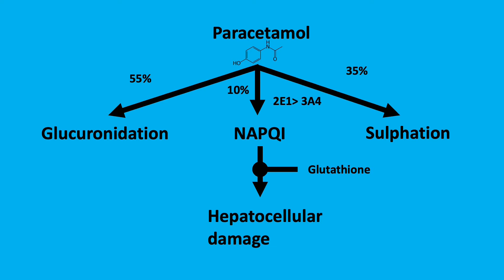Under healthy conditions, NAPQI is conjugated with glutathione to produce a non-toxic metabolite. However, in paracetamol overdose, glutathione levels are depleted and the conjugation pathways are exhausted, leading to increasing levels of NAPQI.